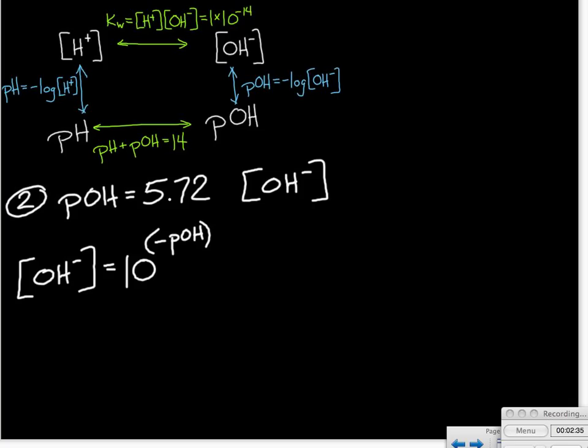We need to take the power, raise, or 10 to raise the power of each side in our equation. So our hydroxide ion concentration is going to be 10 raised to the power of the negative pOH.